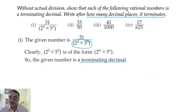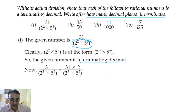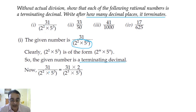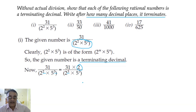Now we have to find how many decimal places it terminates. For that, we need to make the powers of 2 and 5 in the denominator the same. Here, 5 has power 3 and 2 has power 2, so we have to multiply and divide by 2 to make both powers equal to 3. This concept you have to apply in all types of questions.